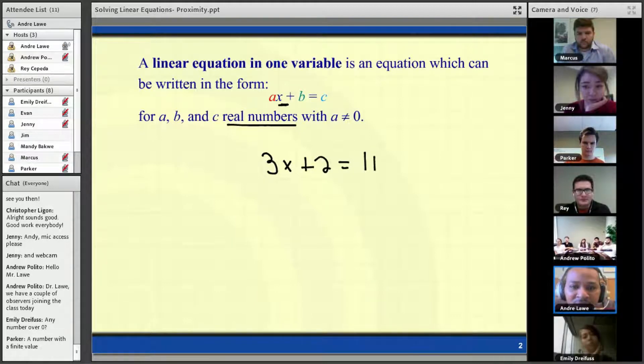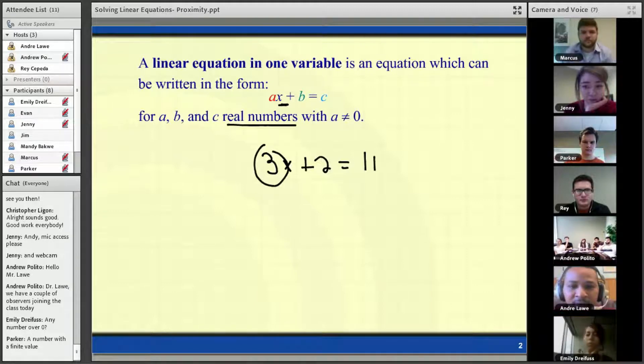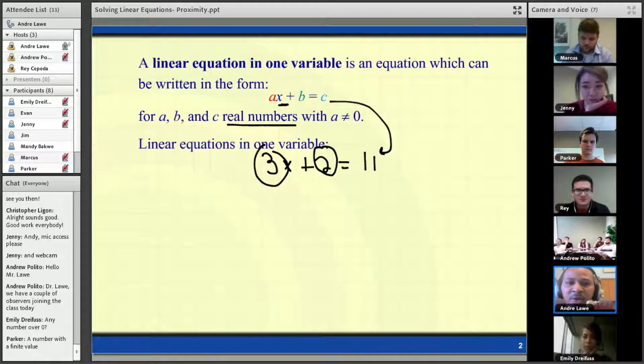So we could see that in this case, in this form, our a would be 3, our b would be represented by 2, and our c would be represented by 11. So that's the standard form of our linear equations when we include one variable.